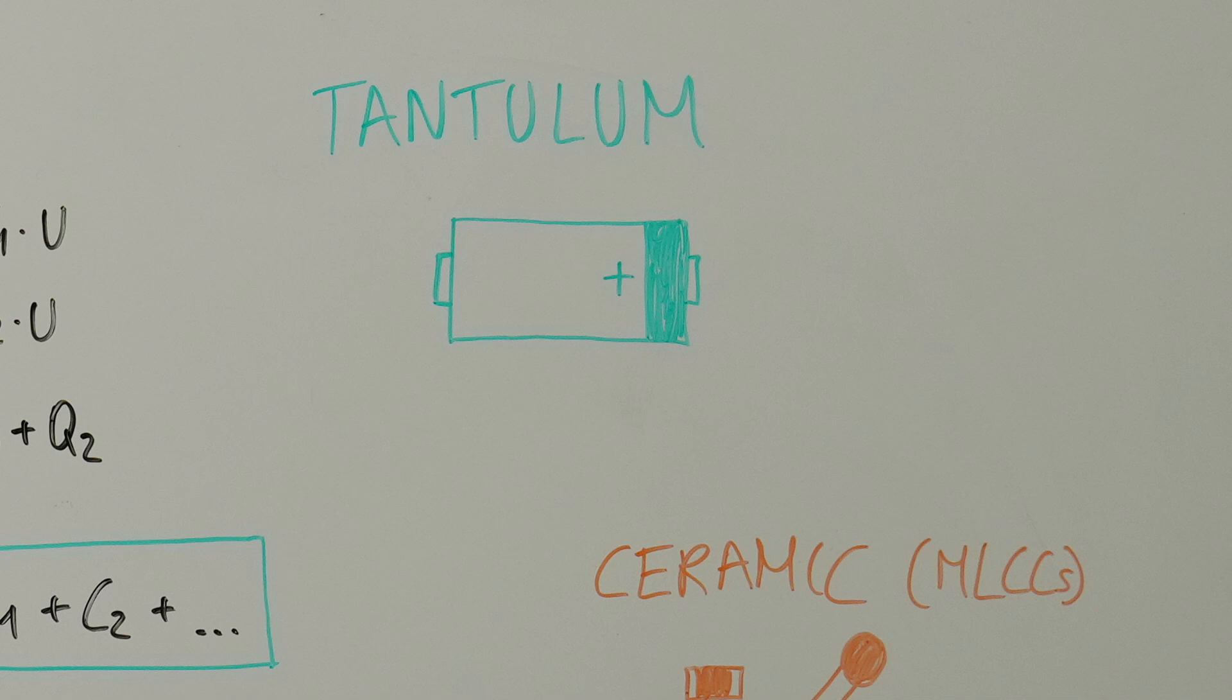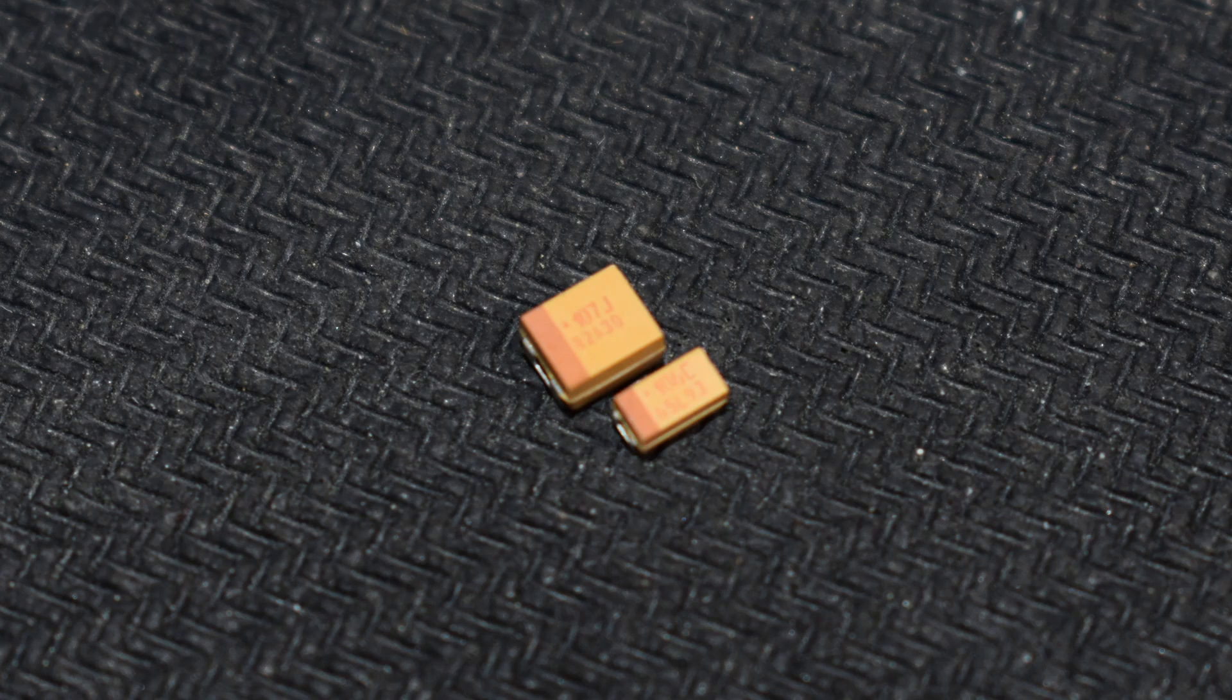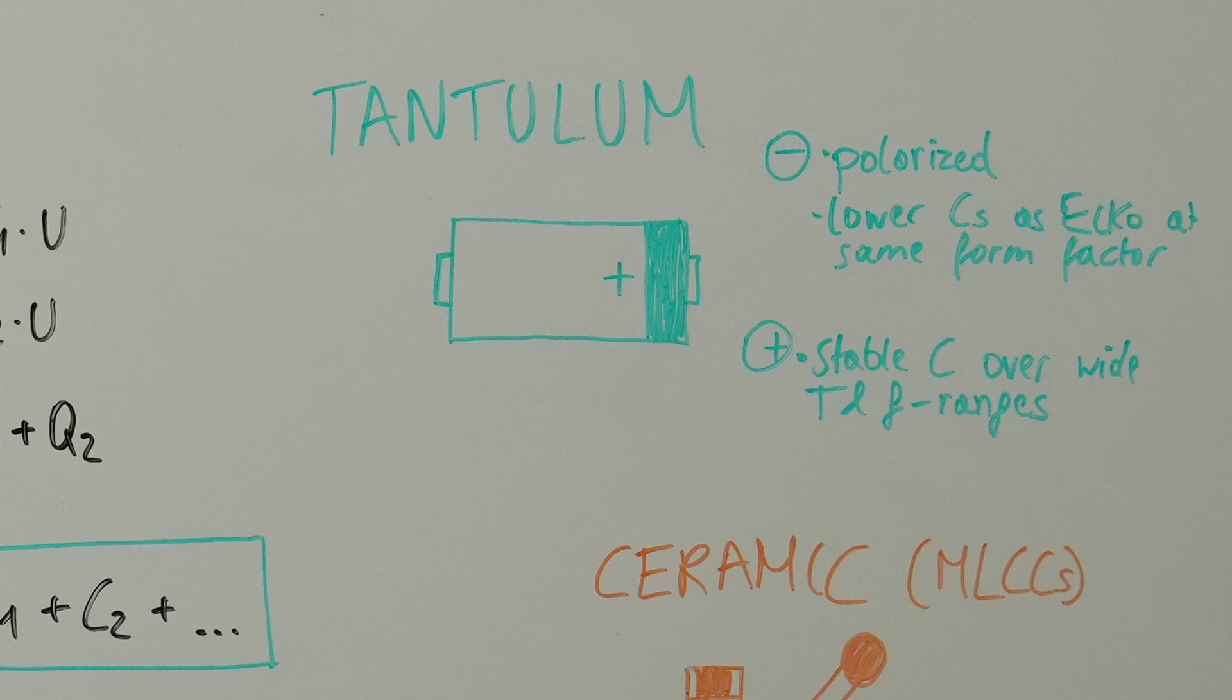The tantalum electrolytic capacitors are often referred to as tantalum capacitors. Instead of aluminum, they use a tantalum metal for the plates. Further, they also feature an oxidized layer as the dielectric, have an electrolyte and are also polar. They provide stable capacitances over a wide range of temperatures and frequencies. Their capacitance values are typically lower than their ALCO counterparts, but they excel in stability and reliability. They have a long lifespan but are more expensive and sensitive to sudden voltage spikes.